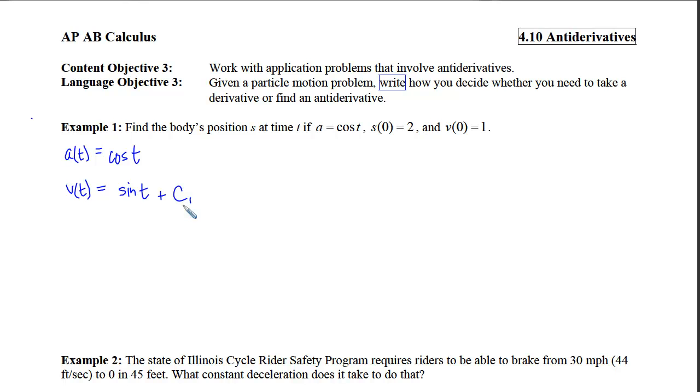In order to nail that constant down, we need a point on the velocity curve. So we go look at our given information, and it says when time is 0, I get a velocity of 1. So that means my output will be 1 when my input is 0. Since the sine of 0 is 0, that tells me that my c sub 1 is 1. So now I know that the velocity at any time will be the sine of t plus 1.